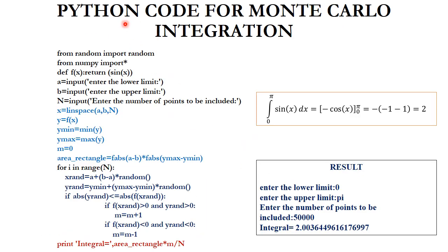Now we will see the Python code for Monte Carlo integration. Initially, the random function is imported from the random module, which generates a random number between 0 and 1. We also import numpy since we use linspace and functions like sine and cosine.